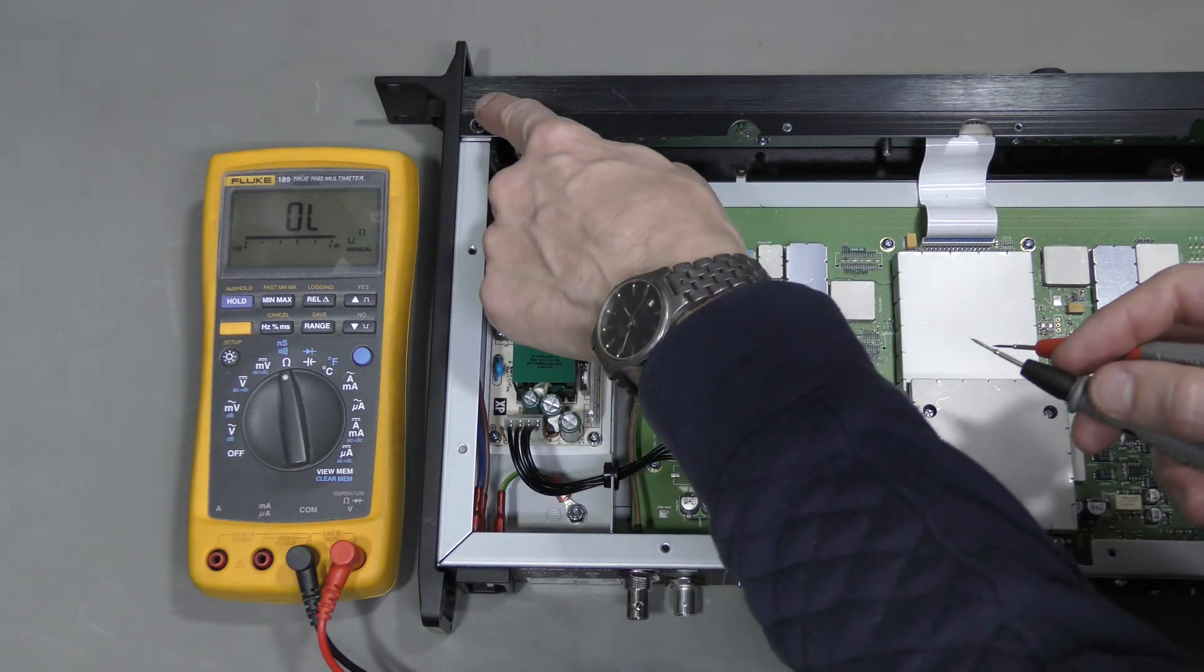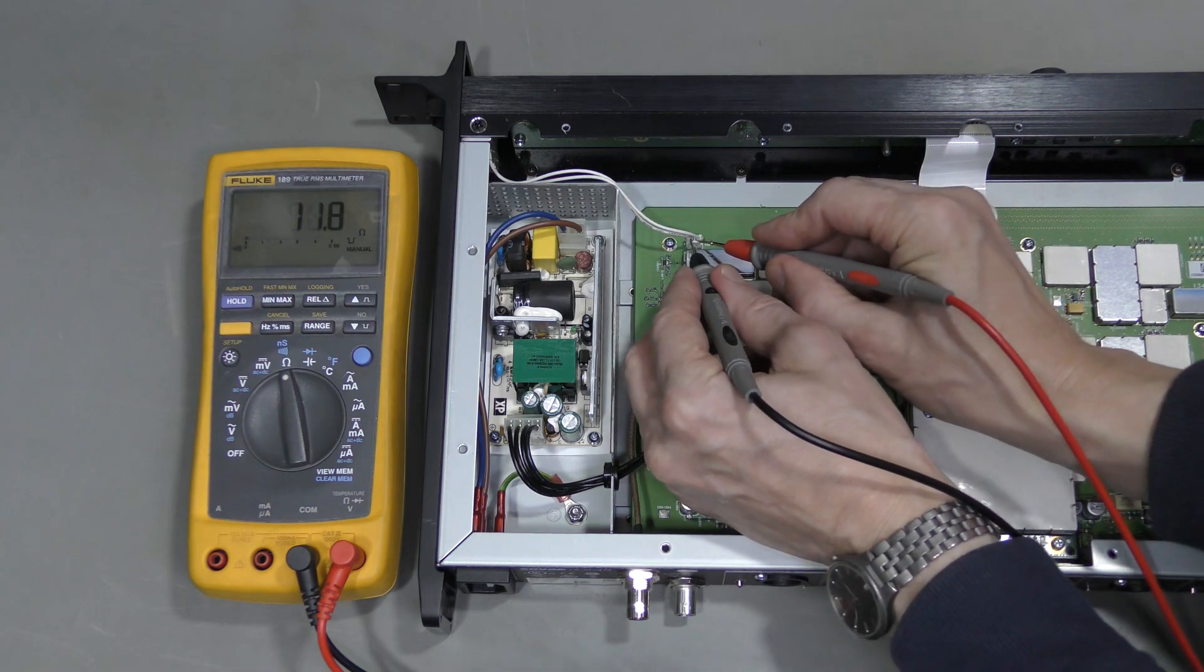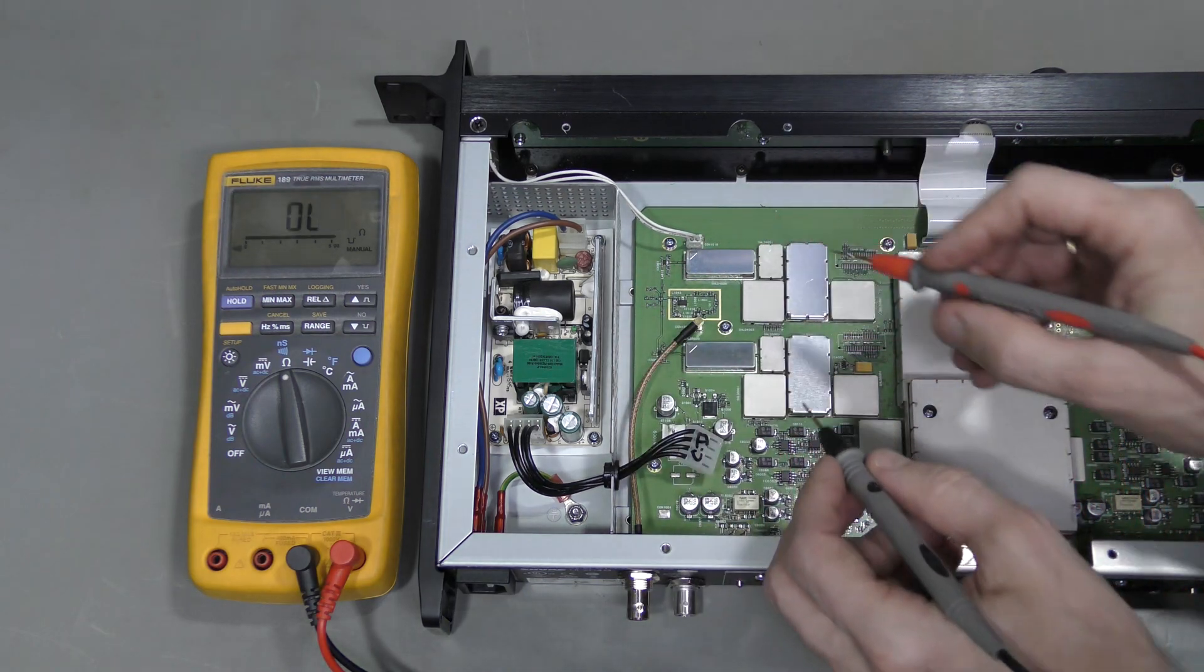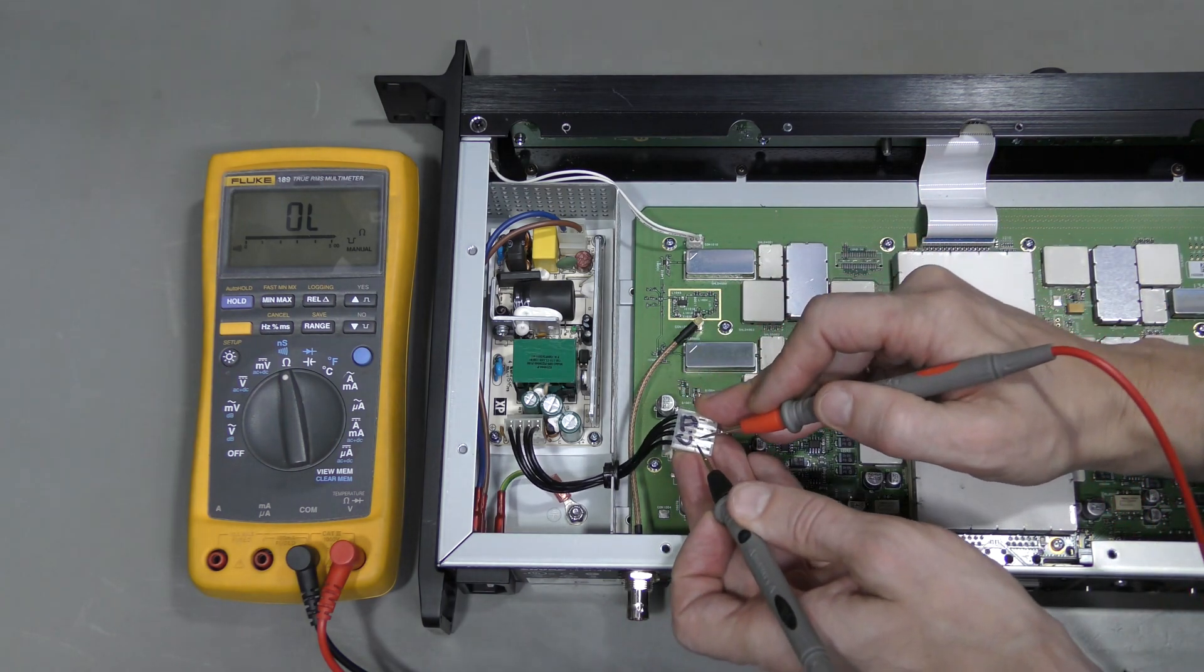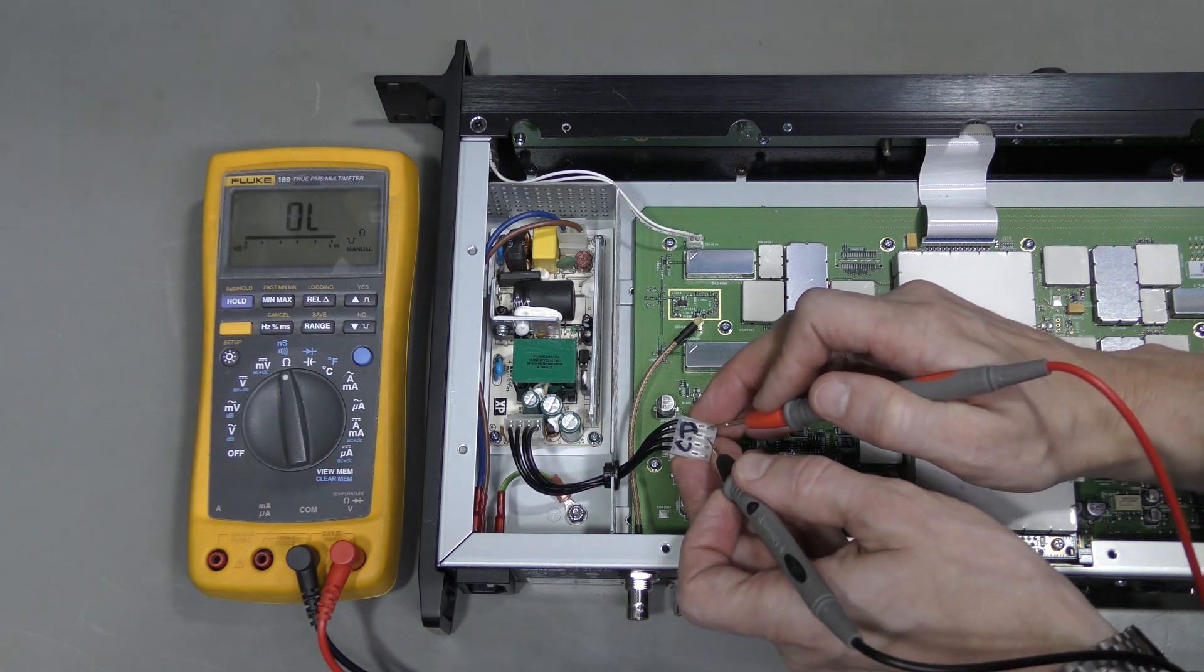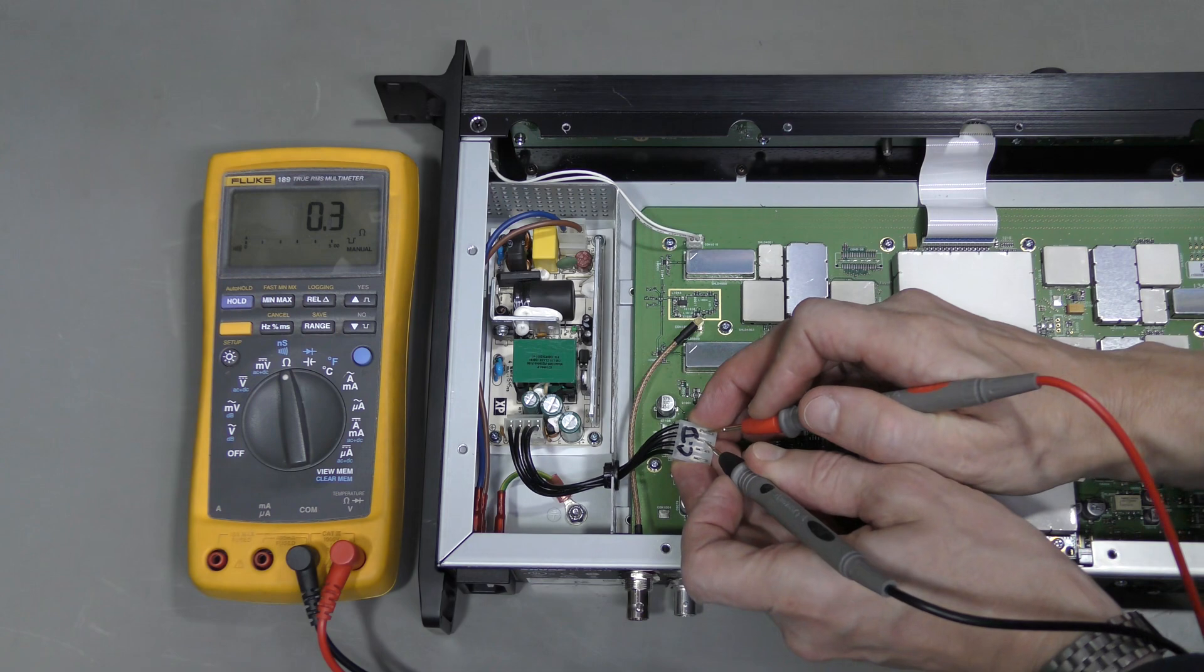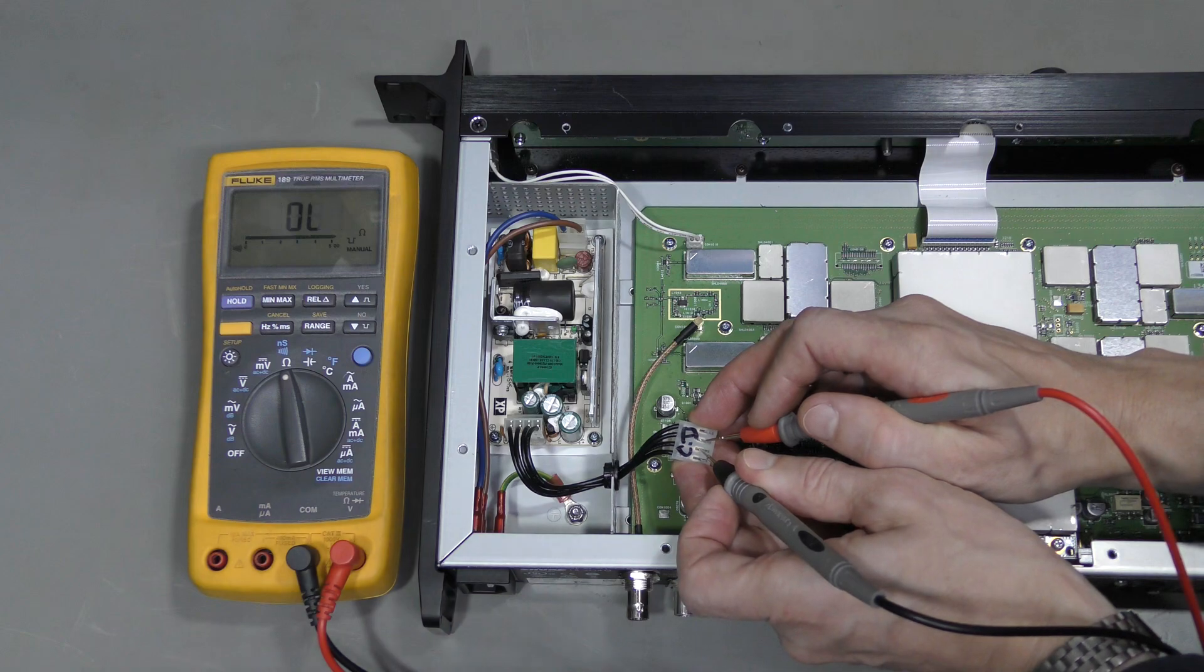The power switch is in the ON position now and it is closed so there is no problem with it. And on the power supply side we can see these 2 pins are connected together and these 2 and nothing in between. Or at least some large resistance.